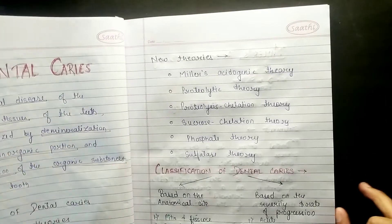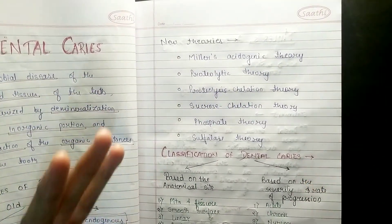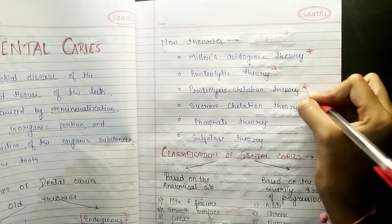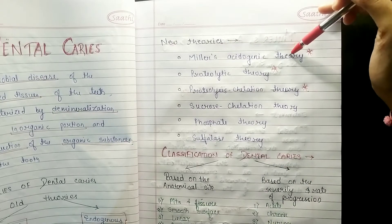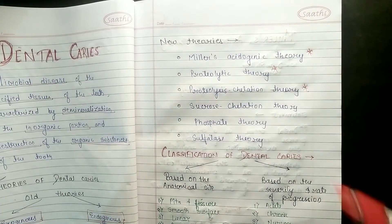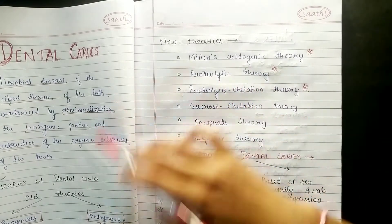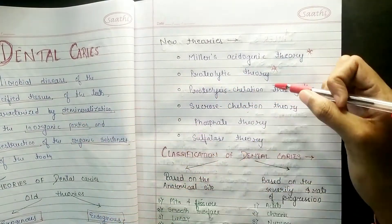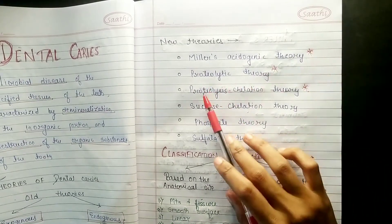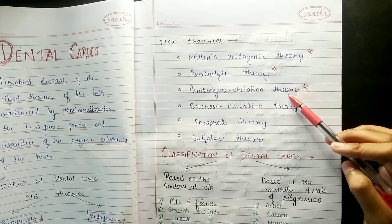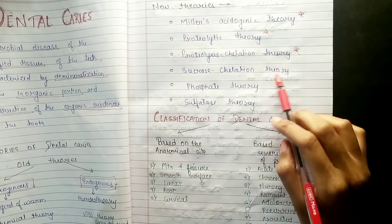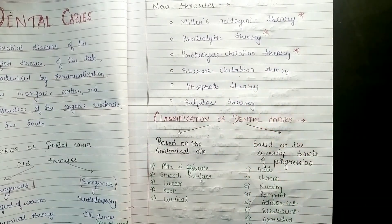Now coming to the most important, that is new theories. New theories: six theories which are very important and you can ask. First, Miller's acidogenic theory, which is really really important. Long note comes to it. Then proteolytic theory, then proteolysis chelation theory. Then sucrose chelation theory, phosphate theory, and sulfates theory.